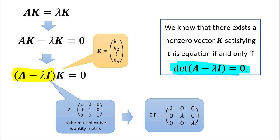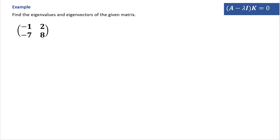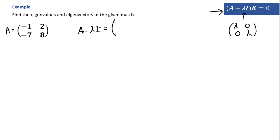Let's do an example to see how exactly this works. We want to find the eigenvalues and eigenvectors for a given 2 by 2 matrix A. The eigenvalue and eigenvector must satisfy the equation (A minus lambda I) times k equals zero. Since our matrix is 2 by 2, the product lambda times I is also 2 by 2. When we subtract A and lambda I, we get the matrix: negative 1 minus lambda, 2, negative 7, and 8 minus lambda.